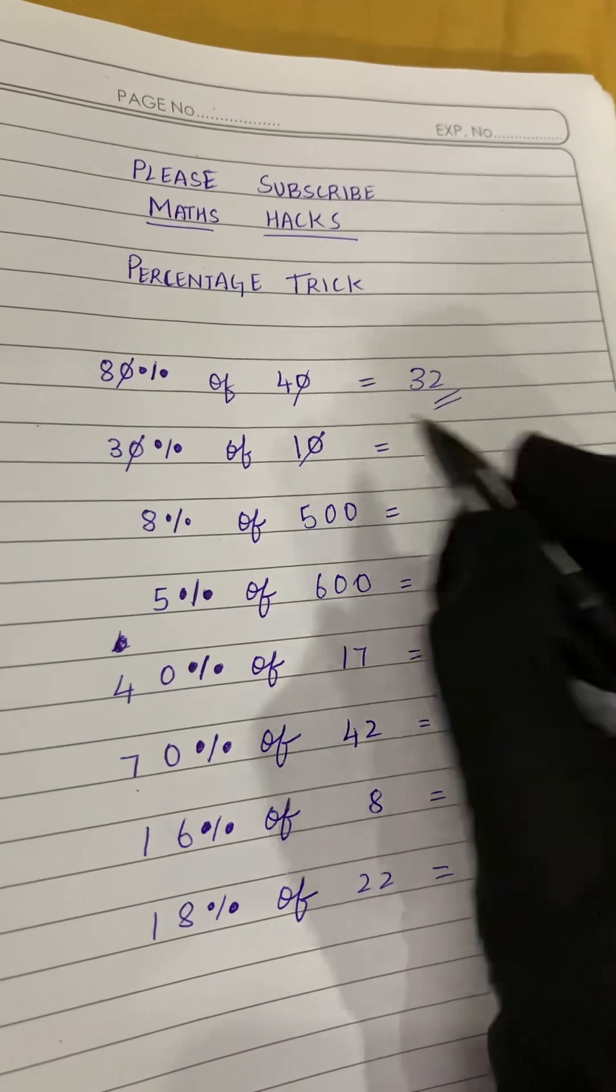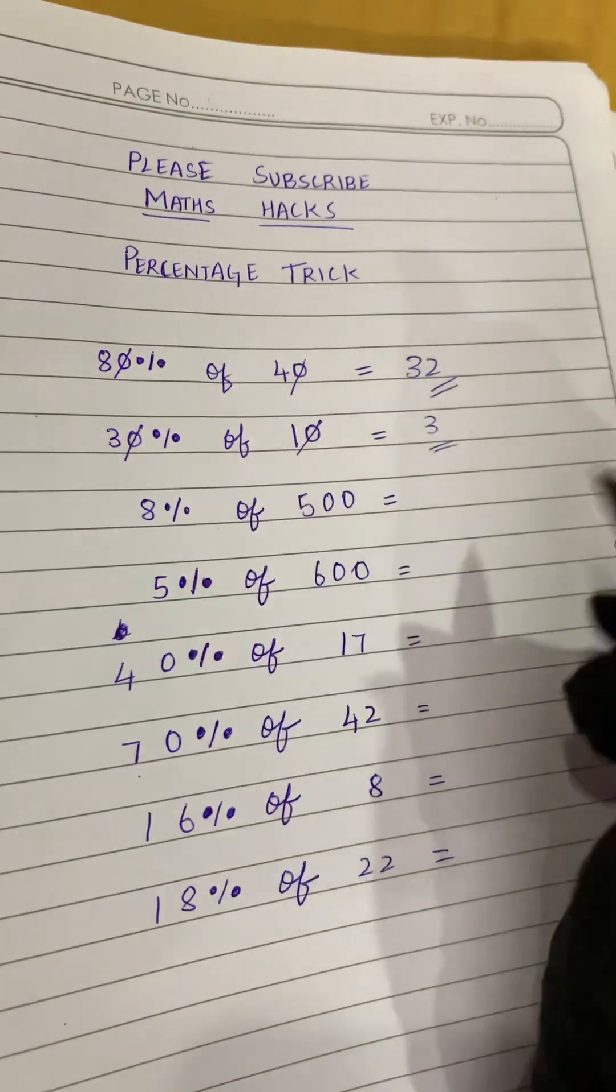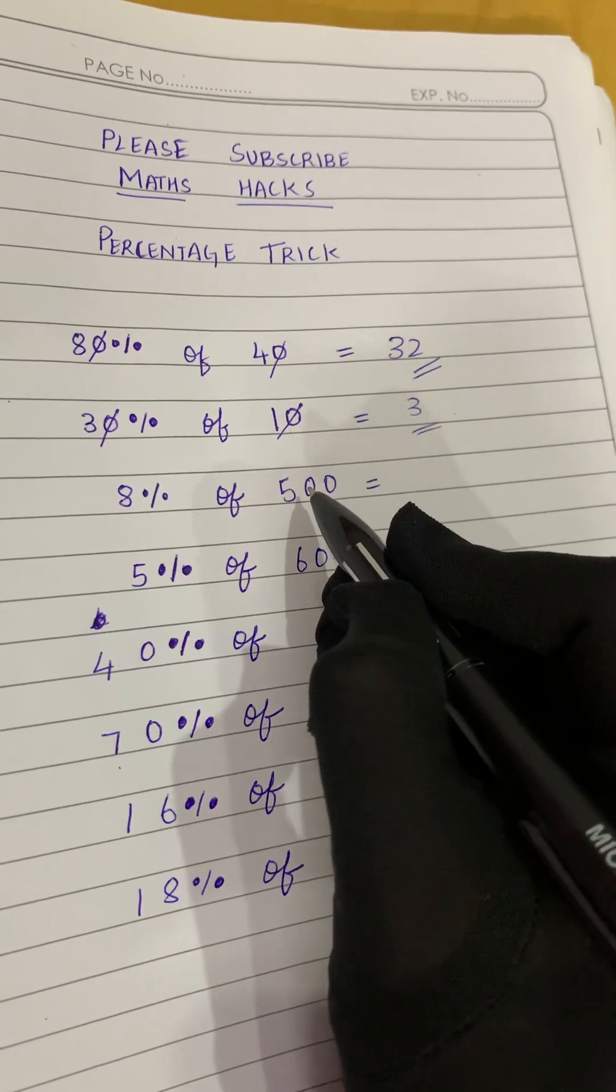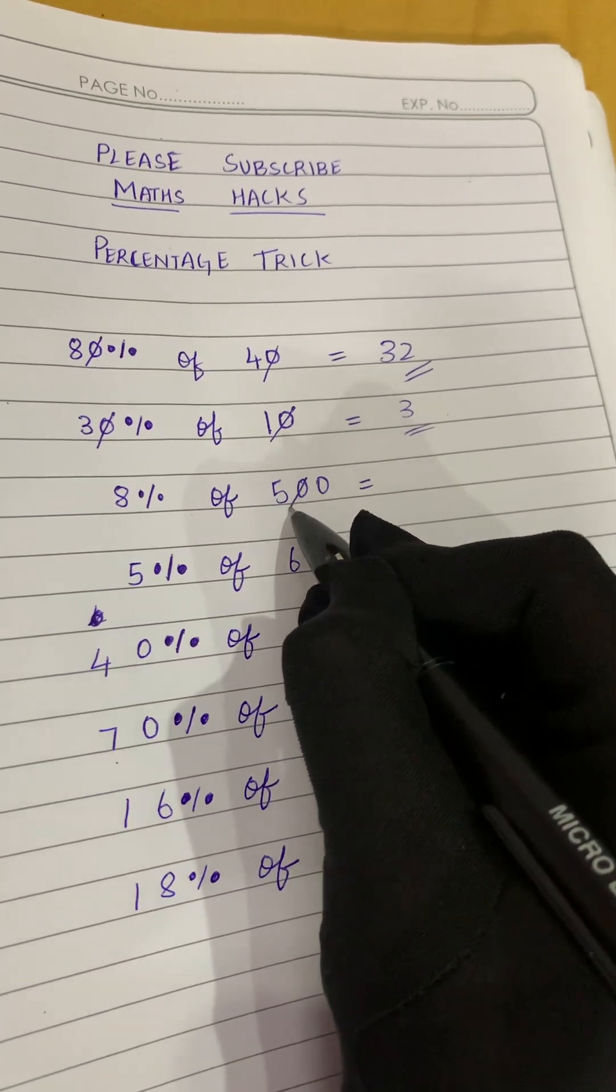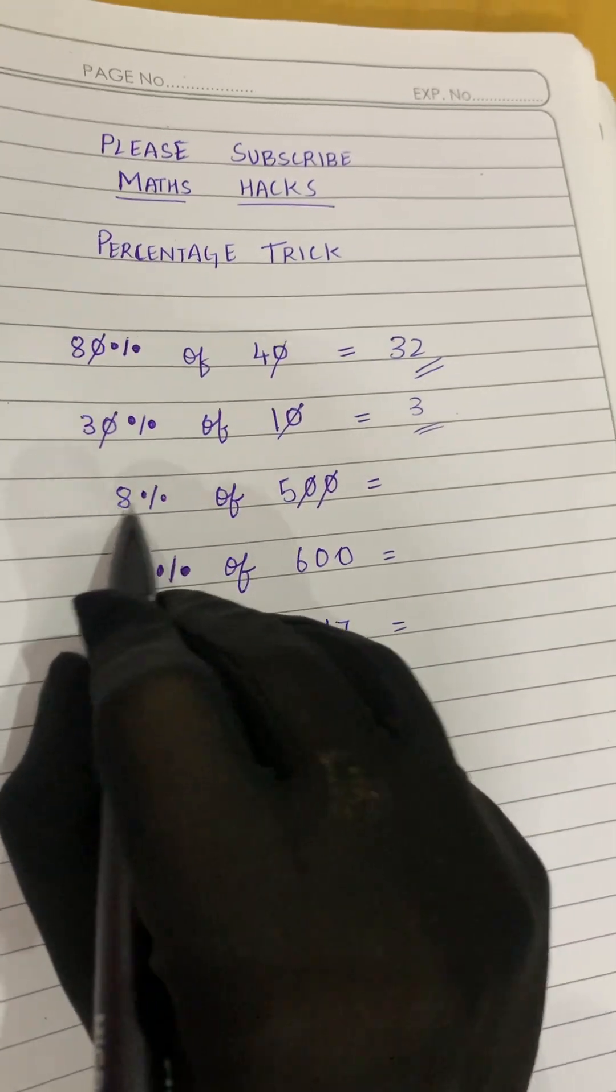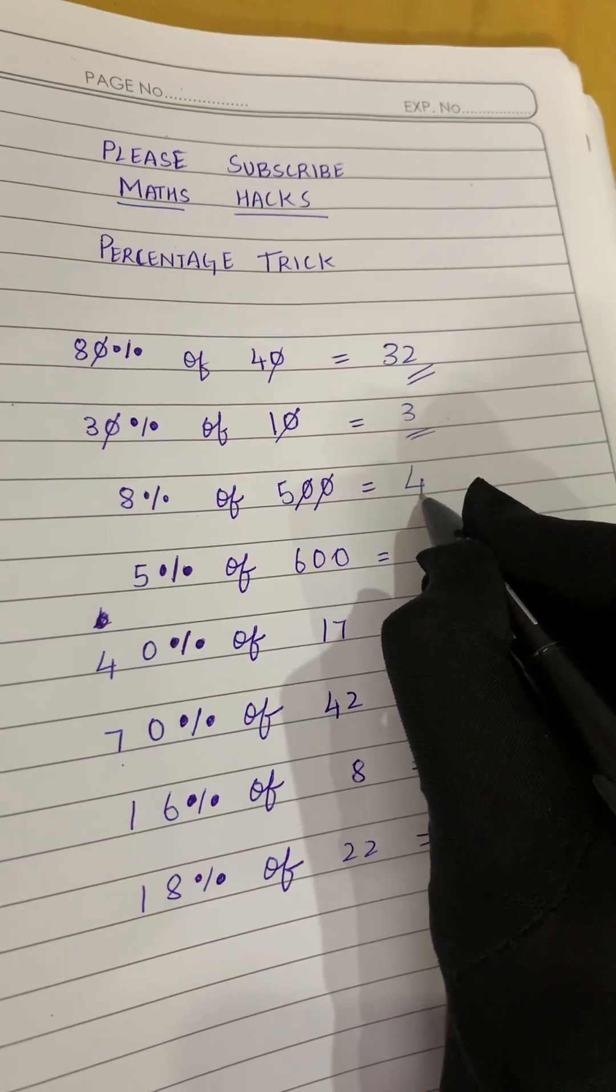Now 8% of 500. The first thing is we will cancel the zeros. Now what is left? 8 and 5. So 8 fives are 40, so 40 is our answer. So 8% of 500 is 40.